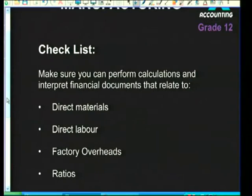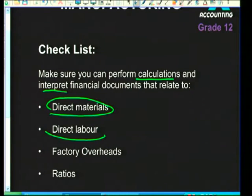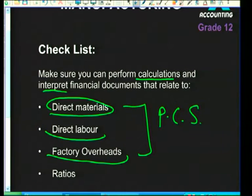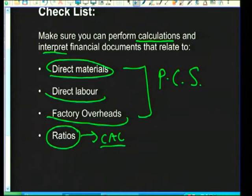Your checklist: you need to perform calculations and interpret financial documents relating to direct material cost, direct labor cost, and factory overheads, which relate to your production cost statement. In manufacturing you'll also come across ratios, such as the break-even calculation, which is absolutely important and always tested in past papers. Now let's start with our question from November 2011.